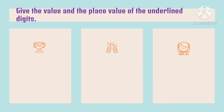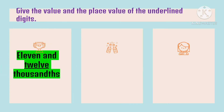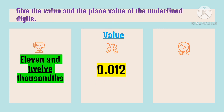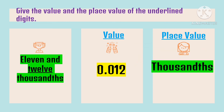How about the value and the place value of 11 and 12 thousandths? The underlined digit is 12. The value of 12 is 12 thousands, with zero holding the place value for the tens place. And the place value of 12 is thousands.